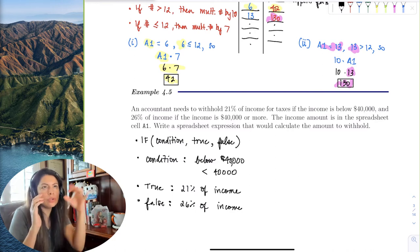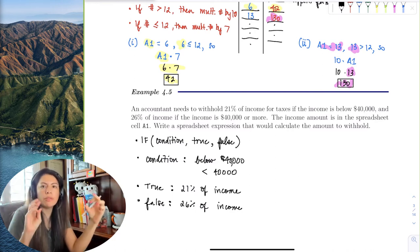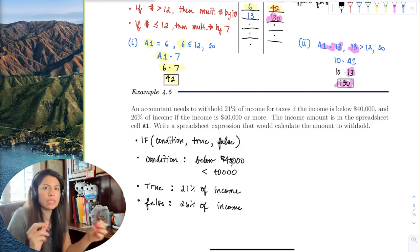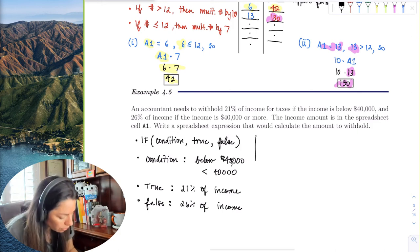So it will look at the income and then determine whether it's larger or less than $40,000, and then multiply by the percentage. So I think we have all the things ready that we need.